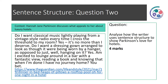Question two. Context: Hannah Jane Parkinson discusses what appeals to her about luxury hotels. 'Do I want classical music lightly playing across a vintage style radio every time I cross the threshold to my room? Yes. It's no more than I deserve. Do I want a dressing gown arranged to look as though it were worn by a hanger? Yes. Am I excited to lounge around in a bar with a fantastic view, reading a book and knowing that when I'm done, I have no journey home? You bet.' The question is: analyse how the writer uses sentence structure to show Parkinson's love for hotels. This is a four mark question, so spend around six to seven minutes on it. Pause the video now and reread the passage.